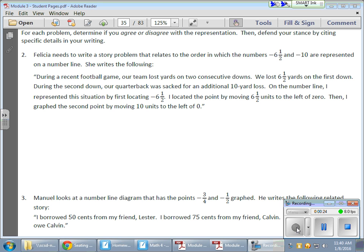So in the first part here, we have Felicia, and she needs to write a story problem that relates to the order in which the numbers negative 6.5 and negative 10 are represented on a number line, so she writes the following. During a recent football game, our team lost on two consecutive downs. We lost 6.5 yards on the first down. During the second down, our quarterback was sacked for an additional 10-yard loss on the number line. I represented this situation by first locating negative 6.5. I located the point by moving 6.5 units to the left of the zero. I then graphed the second point by moving 10 units to the left of zero.